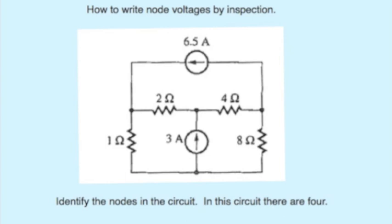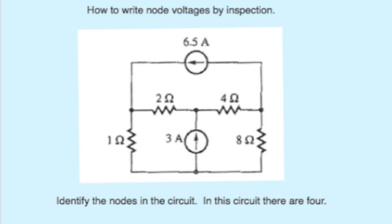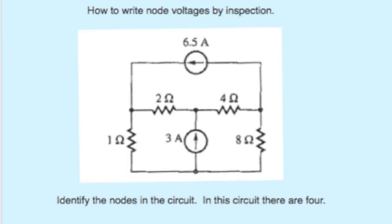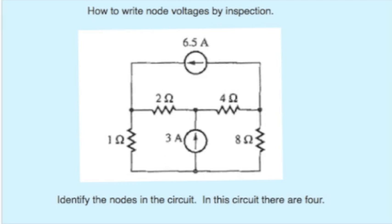Now node voltage equations traditionally arise from writing Kirchhoff's current law at each non-reference node and then using element constraints like Ohm's law to express those node currents in terms of node voltages and, for example, the known resistance values. If you have capital N nodes in the circuit, then there will be capital N-1 node voltages. If we follow the procedure I've just described at each node, one obtains capital N-1 independent equations which we can solve for the node voltages.